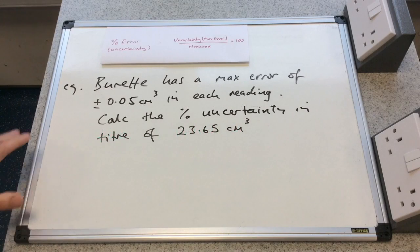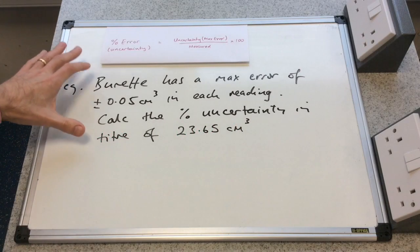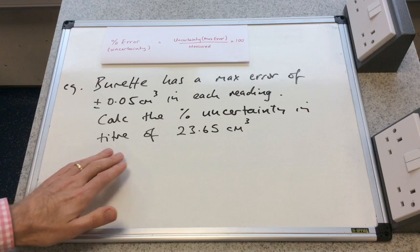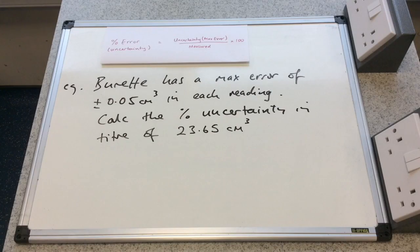So to check you've got that, we'll just have a look at this question here. You can have a go, and then I'll go through the answer. Burette has a maximum error of plus or minus 0.05 cm cubed in each reading. Calculate the percentage uncertainty in a titrant of 23.65 cm cubed.